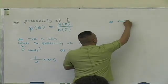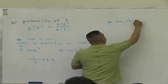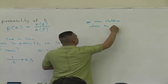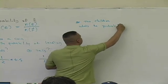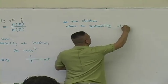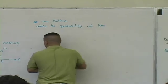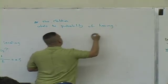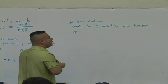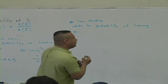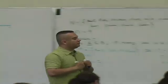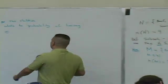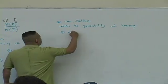Let's look at some more examples. Let's say you have two children. What's the probability of having one? I don't want to give you a hint, but I think I gave it away.